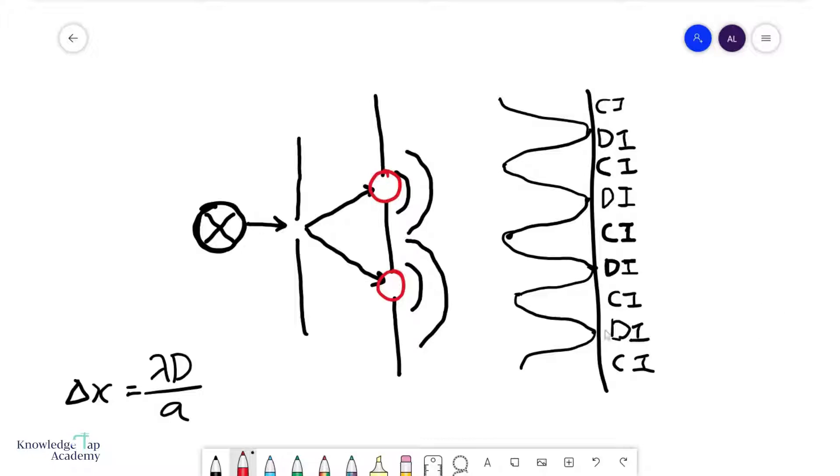and usually how we produce two coherent sources is we start off with one source, diffract it through one slit first, and then the waves will spread to these two slits over here, and that's how you get two coherent sources.